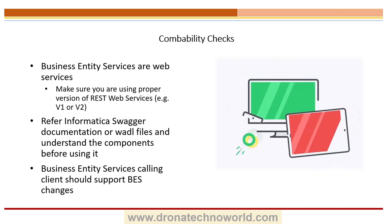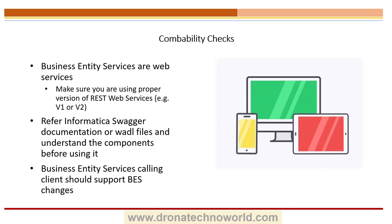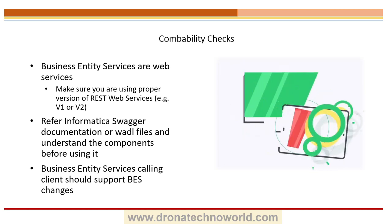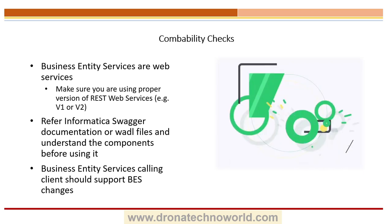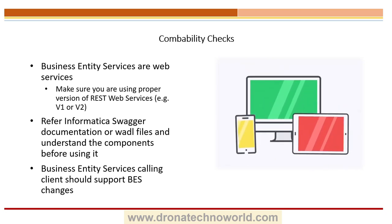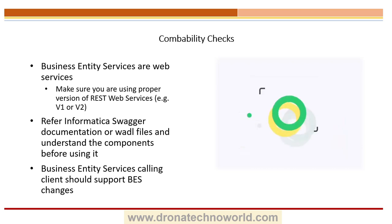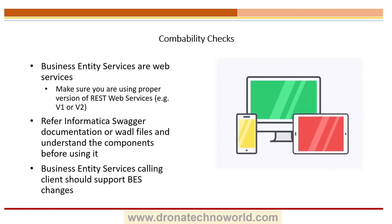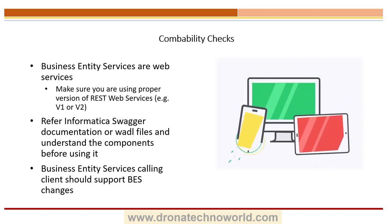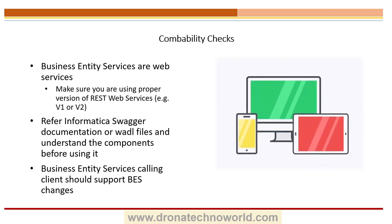When talking about the calling client — it can be Java code, .NET code, or a simple tool such as Postman — make sure whenever you call the Business Entity web services, it supports the changes. For example, if you have Java code calling Business Entity Services and a change happens, make sure your calling code is aware of and accommodates that expected change. You can write dynamic WSDL calling code, but otherwise every time you have to regenerate your stubs, which is more effortful.